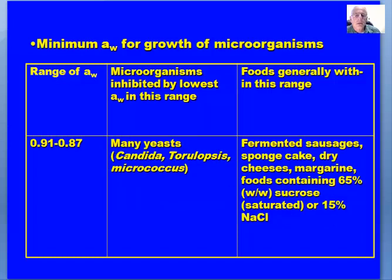As we get down into the lower ranges, many yeasts can grow below 0.870 down to 0.850. The major — and primarily the only — food pathogen we're concerned with in this water activity range would be Staphylococcus aureus.